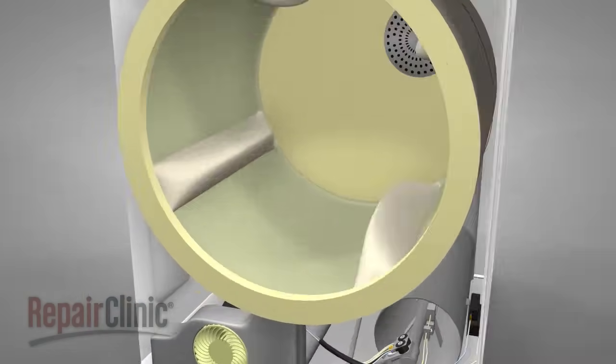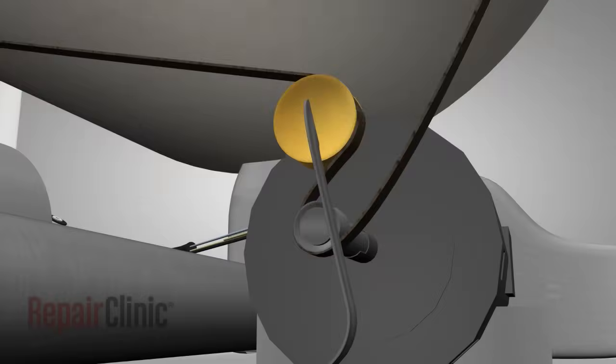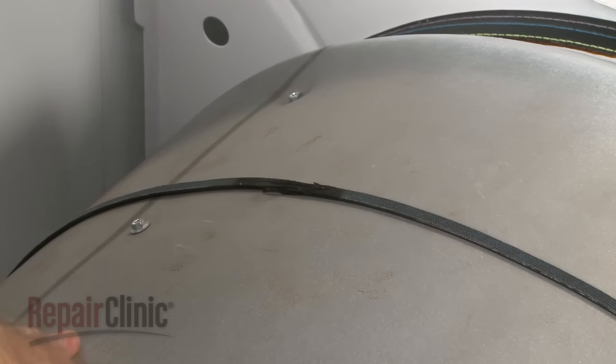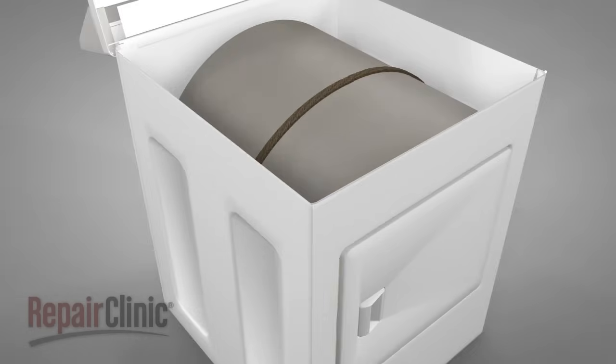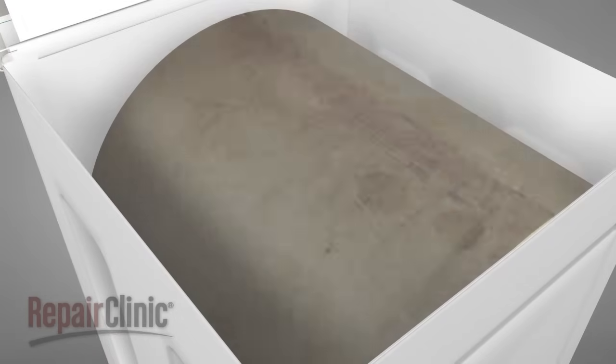If the drum is overloaded, or if a support roller, glide, bearing, or pulley fails, the belt may begin to slip. It can also fray and eventually break. When the belt breaks, you may hear the motor running, but the drum will not rotate.